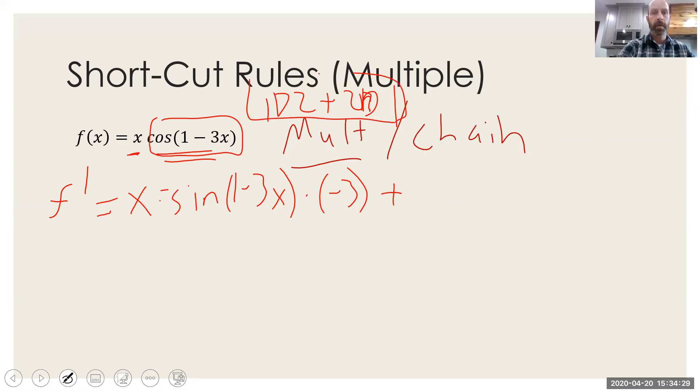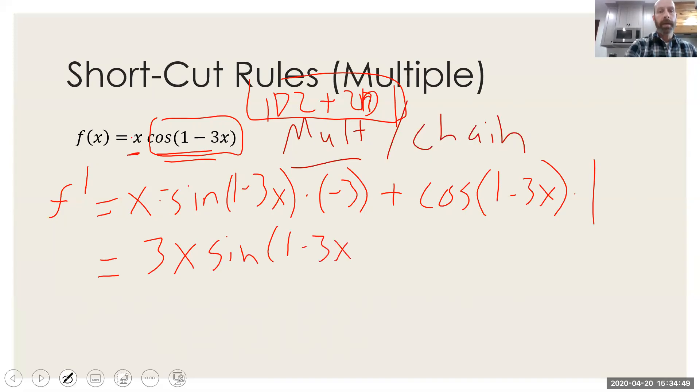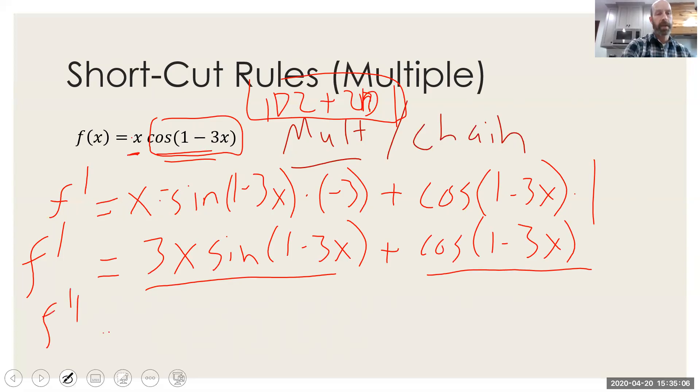Plus, so again, we're doing the product rule here. So the second thing is cosine of one minus three x, and then the derivative of x is just one. So then you can clean this up. And you will get a final answer here of three x sine one minus three x plus the cosine of one minus three x. So that's your first derivative. If we wanted to find the second derivative, we would have to do it again. We would have to do the chain rule here and the product rule again here. So that would give us f double prime. I'll let you figure that out. We're getting close to the end though.